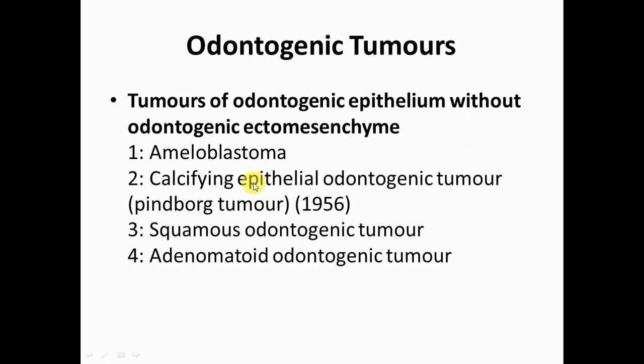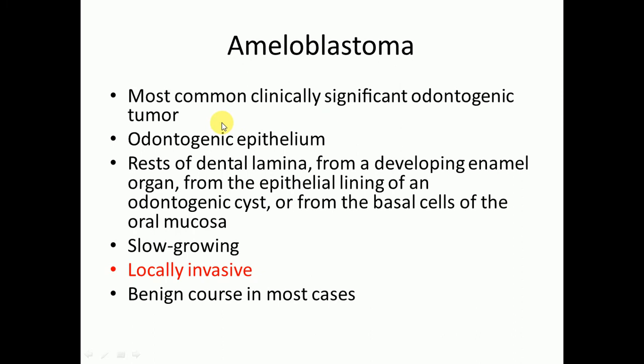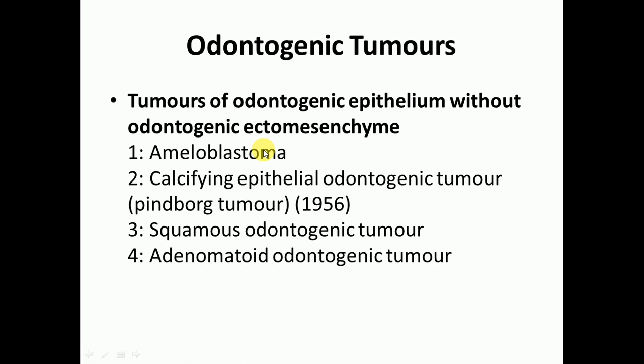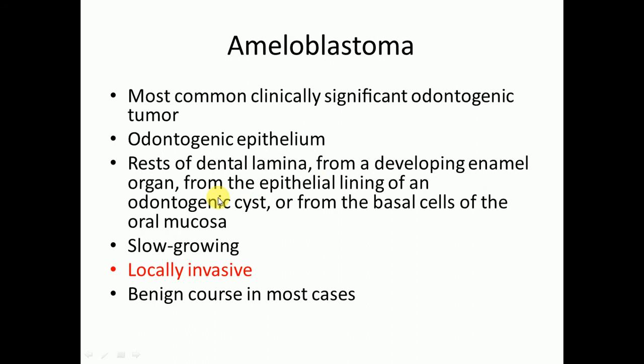Ameloblastoma is the most common clinically significant odontogenic tumor. It arises from the odontogenic epithelium without odontogenic ectomesenchyme. Theoretically, it may arise from the rests of the dental lamina, a developing enamel organ, the epithelial lining of an odontogenic cyst, or the basal cells of the oral mucosa. It is generally slow growing, locally invasive, and runs a benign course in most cases.